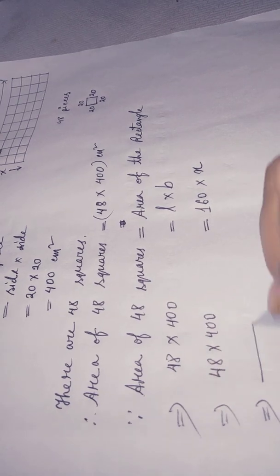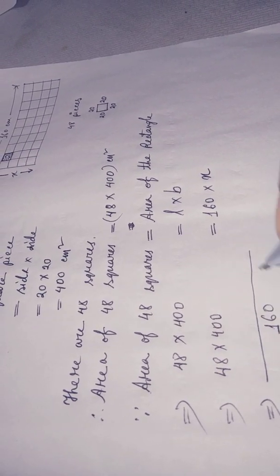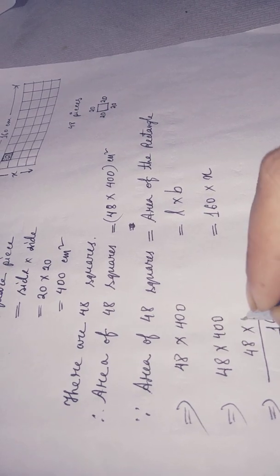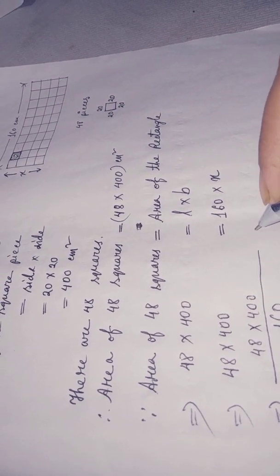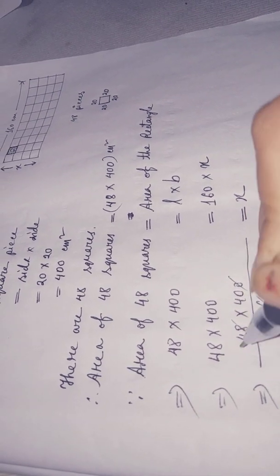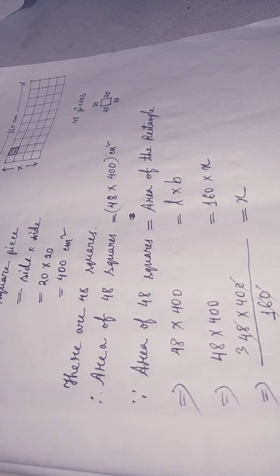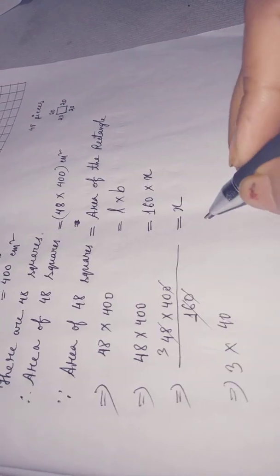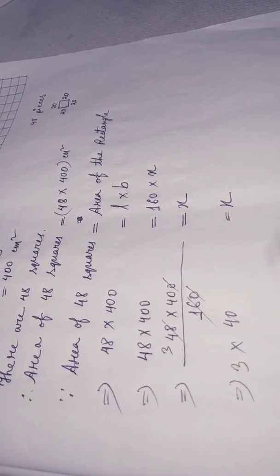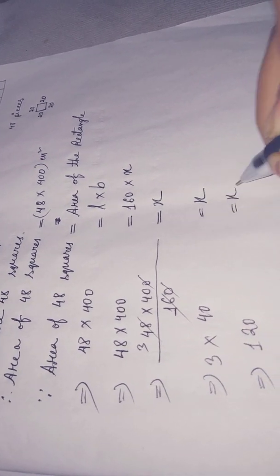48 into 400 divided by 160. 3 into 40 equals 120 equals X.